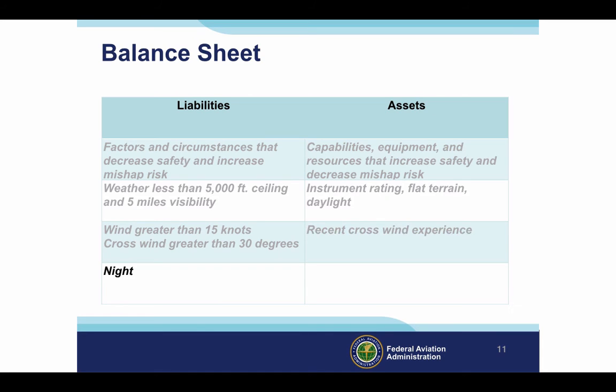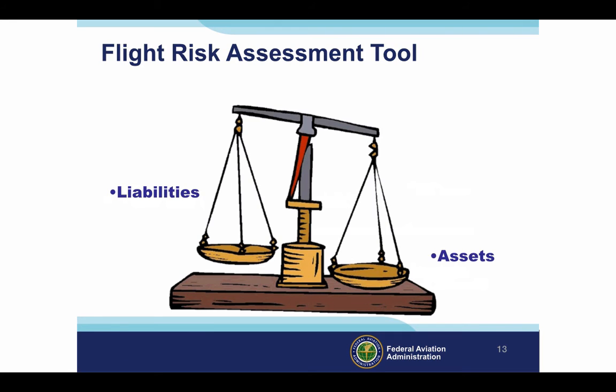But what if we want to make this flight at night? That may just be more risk than should be accepted. If we're going to do it at night, we really want to have weather better than 5,000 and 5 miles, and an instrument rating with flat terrain would also be an asset, of course. We've just built a simple flight risk assessment tool, or FRAT as they say, and we've used it to identify assets that compensate for liabilities. There are many more safety factors to consider for any flight — so many, in fact, that the General Aviation Joint Steering Committee recommends use of a flight risk assessment tool to help pilots in their pre- and in-flight evaluations.